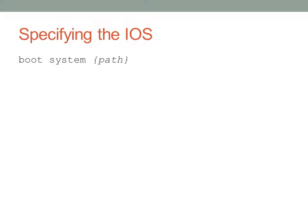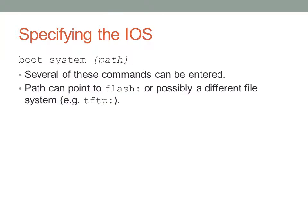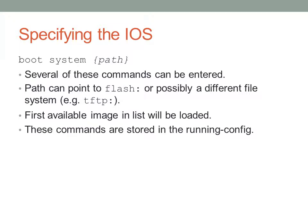If you want to specify what IOS is booted, this is done with the boot system command, normally with a path to the image you want. Several of these commands can be entered, and with the default configuration register it will take the first one. You can enter a path in Flash or to a TFTP server. The first available image in the list will be loaded by default. These commands are stored in the running configuration, so you'll need to be in config mode to enter them.